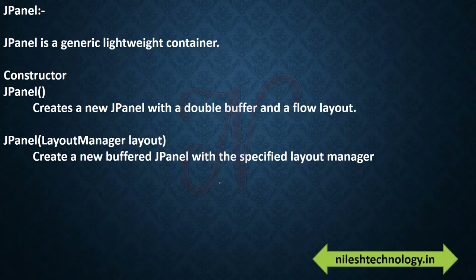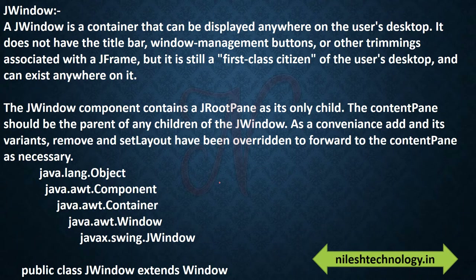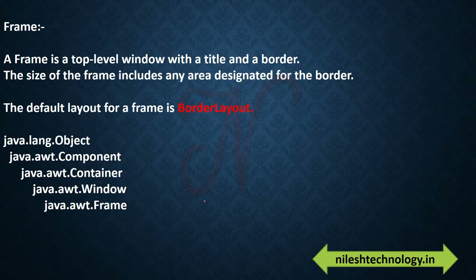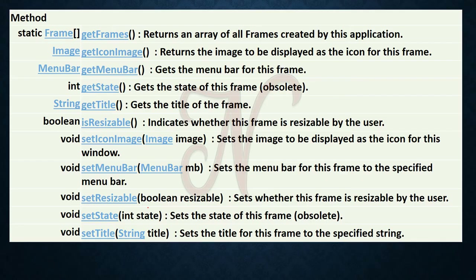Next is JPanel, which is the Swing equivalent of Panel. Next is JWindow, which is similar to Window and is very useful in Swing. The hierarchy for JWindow is: Object → Component → Container → Window → JWindow. Next is Frame — a Frame is a top-level window with a title and a border, and by default its layout is BorderLayout.